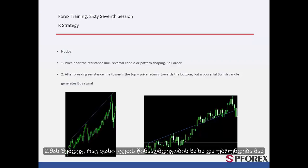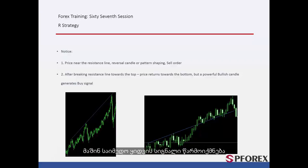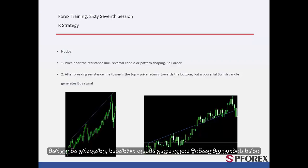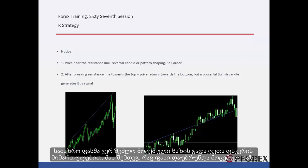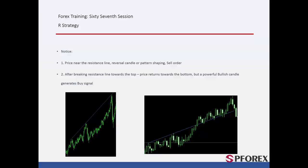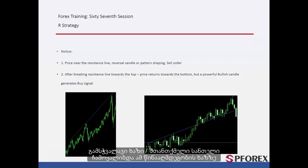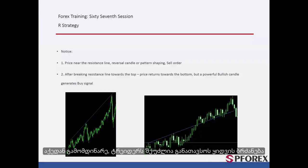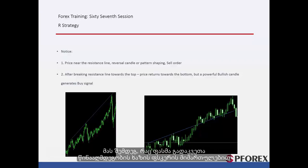After price passes the resistance line and returns towards it, if a powerful bullish candle forms on the resistance line, then a reliable buy signal will be generated. On the right graph, market price passed the resistance line but could not pass it towards the bottom after returning. A piercing line or engulfing candle formed on this resistance line, so a trader could place a buy order. After price crossed the resistance line towards the bottom, a trader could place a sell order lower than the bearish candle.